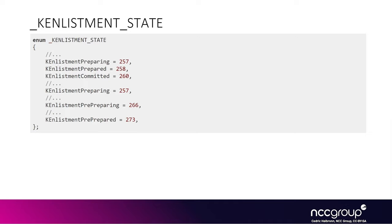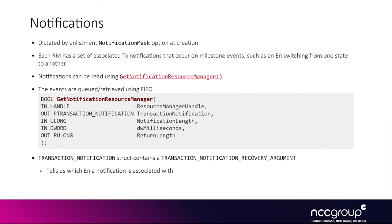Fortunately, all of the states that enlistments go through are documented publicly in an enum called k-enlistment-state. When you have enlistments transitioning into states, the state changes result in a notification being queued into the notification queue associated with the resource manager.